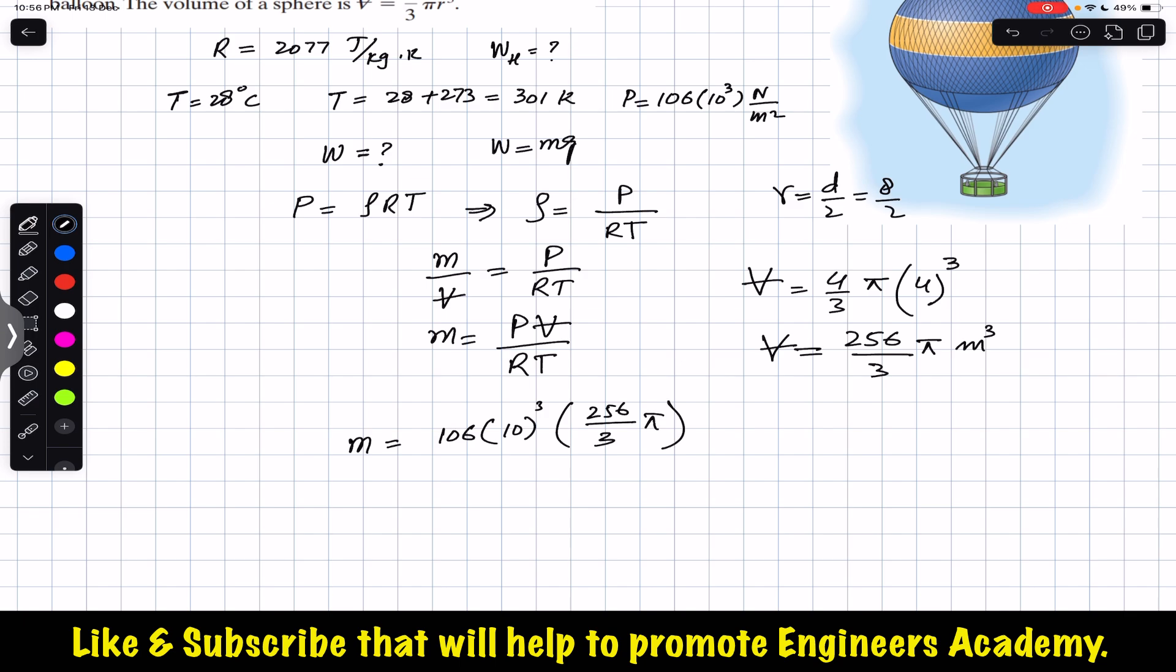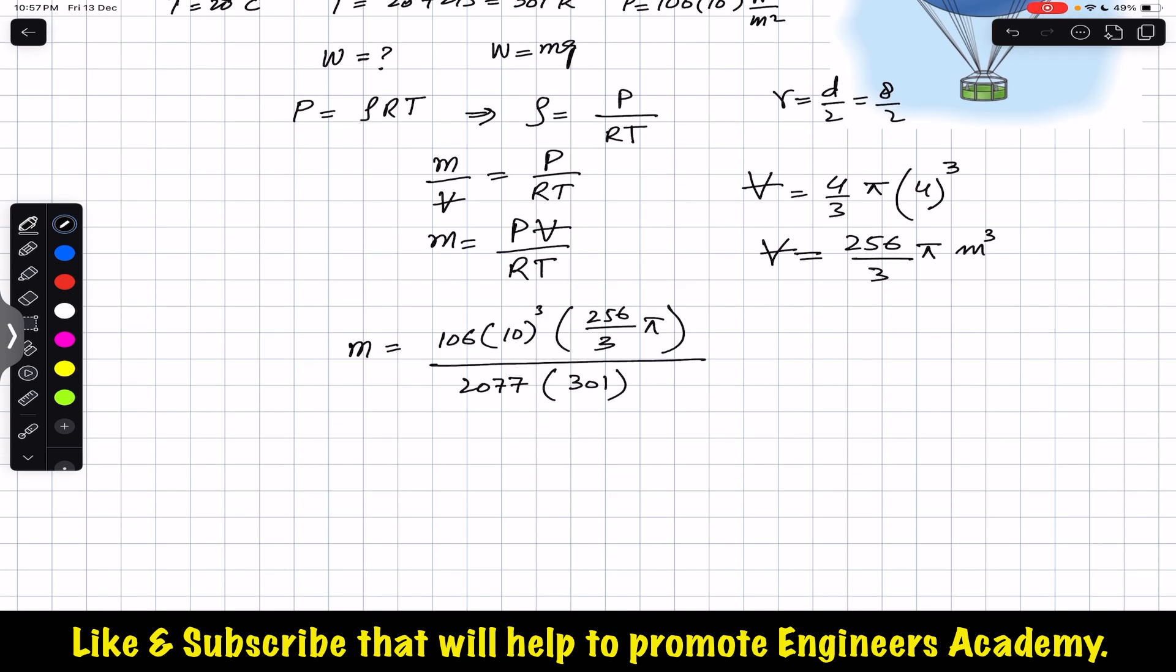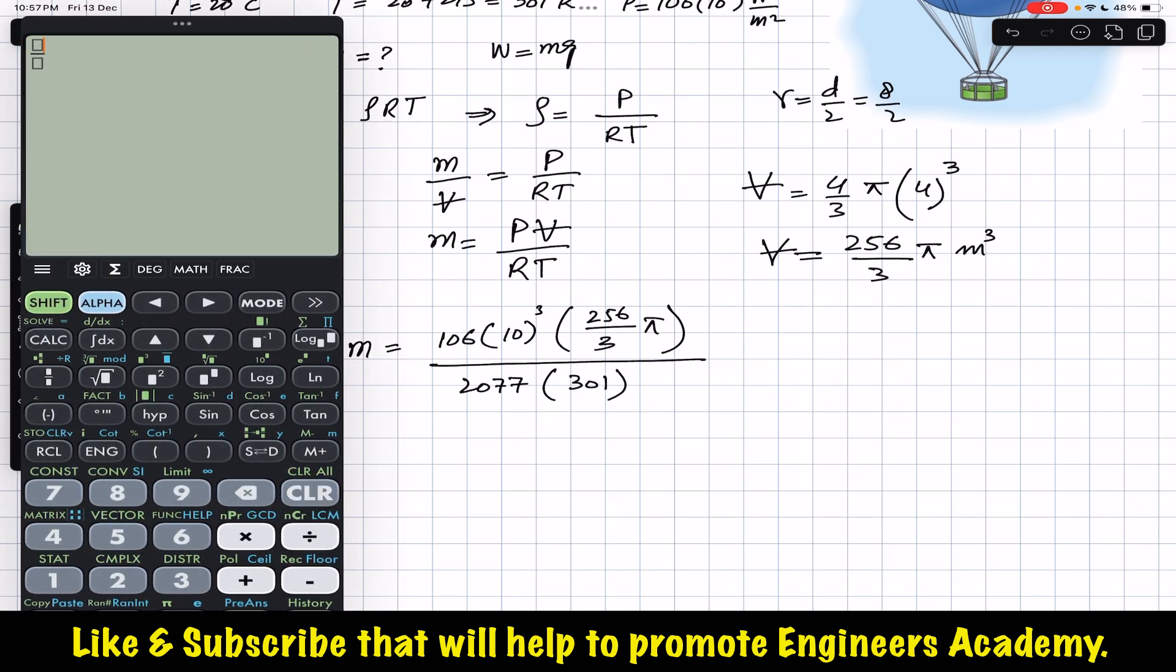So the mass is equal to... we can say this is 106 × 10³ × (256π)/3, divided by 2077 × 301.